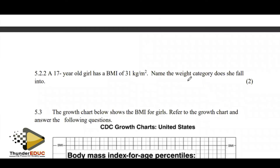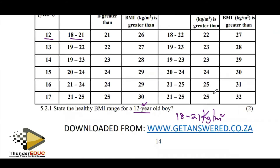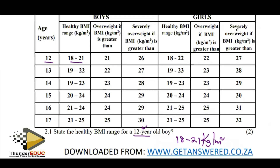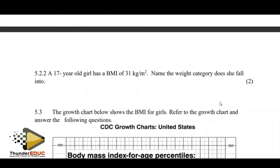A 19-year-old girl has a BMI of 31 kg/m². Name the weight category she falls into. These are the categories we have. She has a BMI of 31, which is severely overweight.